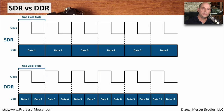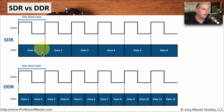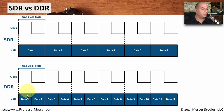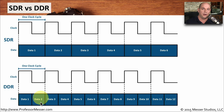If we were to put single data rate memory and double data rate memory side by side, you would see the differences in total information transferred. With SDR, we had a single clock cycle and were able to send one piece of data. But with DDR, you've got double data rate — you can have a single clock cycle but you're sending data on both the high end and the low end of the clock, which effectively doubles the amount of throughput over an SDR.